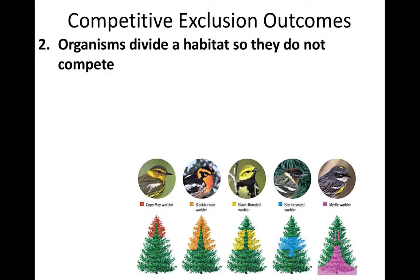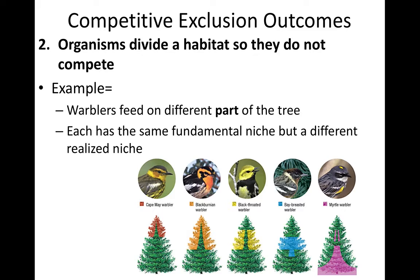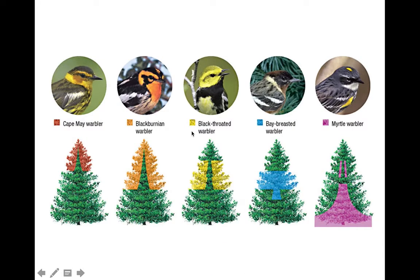The second outcome is not so doom and gloom. It's an example where organisms divide a habitat so that they don't compete — they have different niches in one environment. These birds are called warblers and they all feed on this tree. Every single one of them, if left alone, would feed on the whole entire tree — that is their fundamental niche. However, they can't all have the same niche, so they've divided up the tree. You can see each bird is feeding off a different part of the tree, so each bird has a different realized niche.